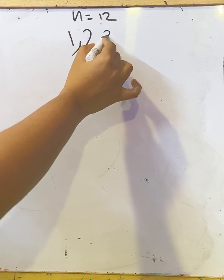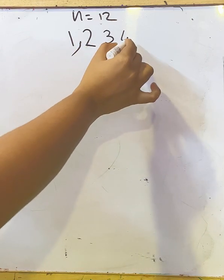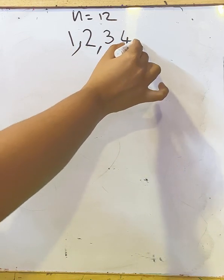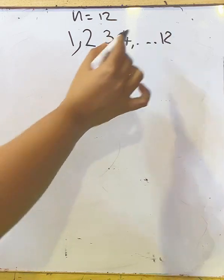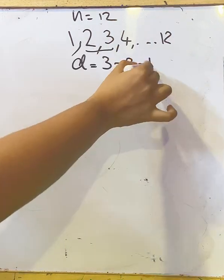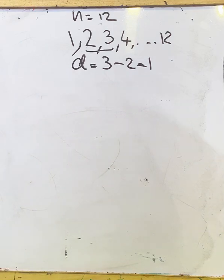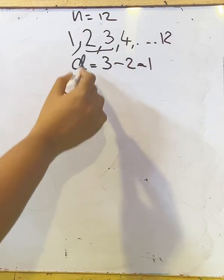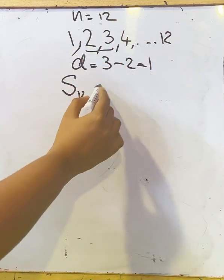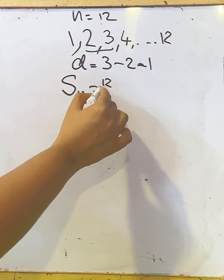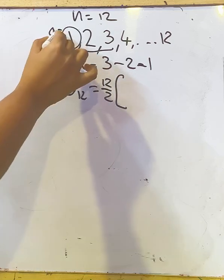And here the common difference d = 1. So we have to find how many trees they planted, that is the sum. So S12, there are 12 terms here, so S12 = 12/2 × [2a + (n-1)d].